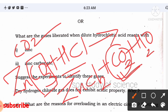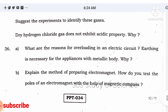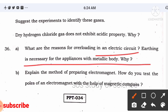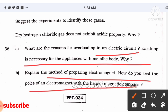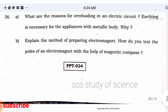Question 36 asks about the reasons for overloading an electric circuit, what is necessary for appliances with metallic bodies, and explains the method of preparing an electromagnet and how to test its poles using magnetic compounds. These physics concepts have already been covered — you can expect this in the exam.